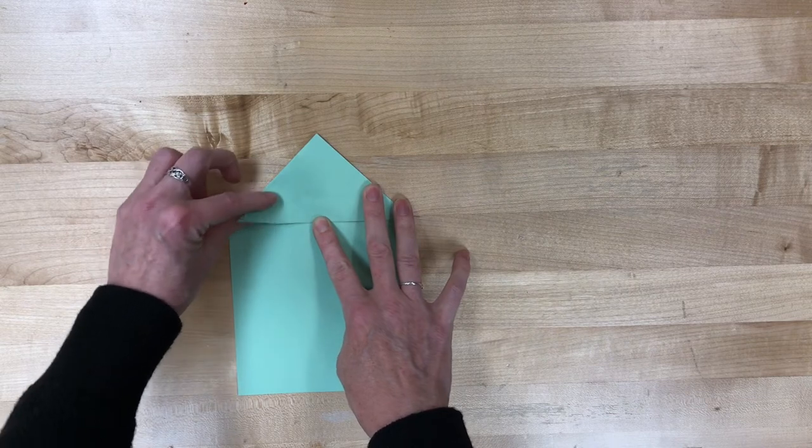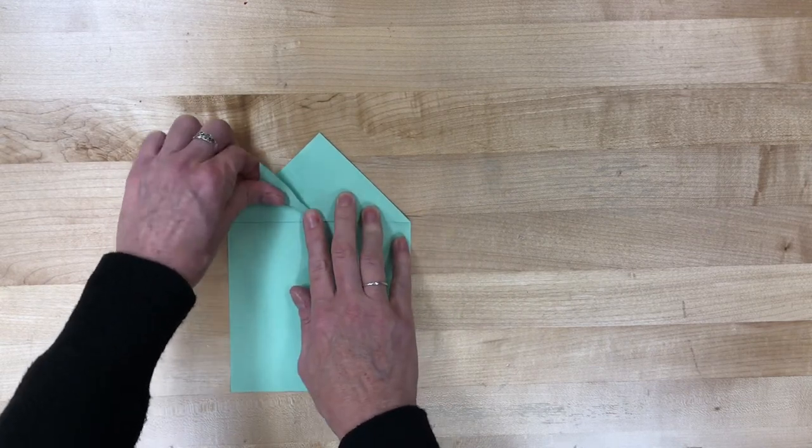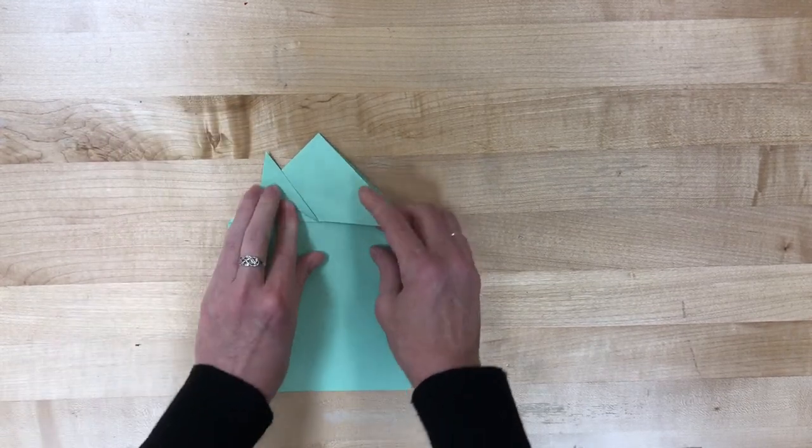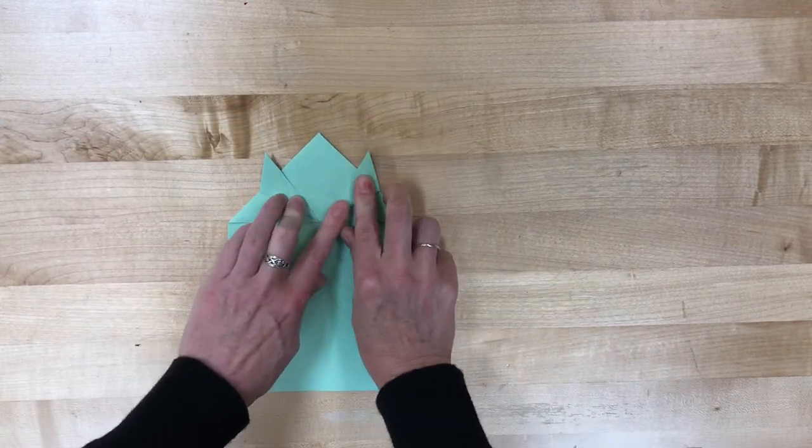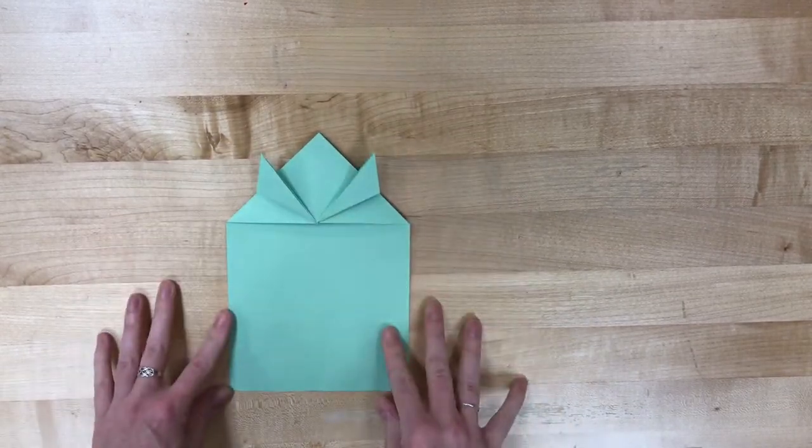Now the left corner we're gonna bend it up. Not all the way up, just enough. We're making a little front frog leg here. And then we're gonna do the same thing to the other side. You want them to meet up in the middle there.